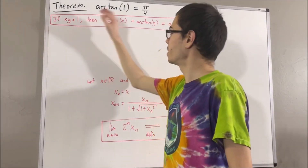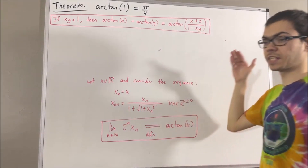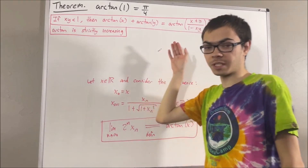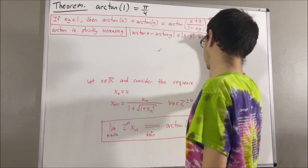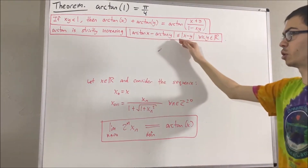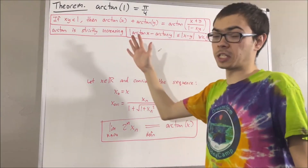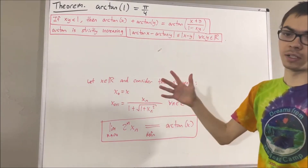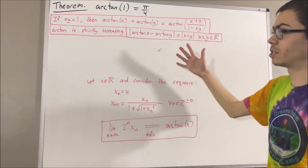If xy is less than 1, then this equality holds — the arctangent addition formula. We've also proven that the arctangent function is strictly increasing and continuous. To prove continuity, we first proved that the absolute value of arctan(x) minus arctan(y) is less than or equal to the absolute value of x minus y for all real numbers x and y. We also proved the arctangent function is bounded, giving it a least upper bound and greatest lower bound. In particular, we defined π over 2 to be the least upper bound of the arctangent function.